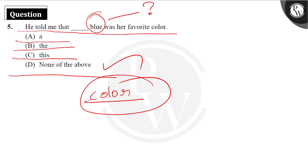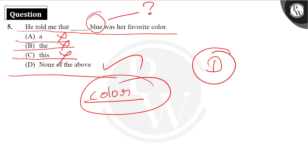We are not talking about which blue we are talking about. So we have to take Option D as our answer. Option A, B, and C are cancelled. We need to be very observant and careful while choosing the options, as that is not the right thing to do carelessly.